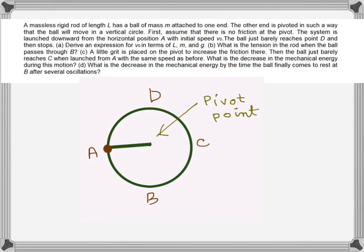The problem describes a massless rigid rod of length l with a small mass m attached to one end and a frictionless pivot at the other end. It undergoes vertical circular motion, starting from position A with velocity v_naught in the counterclockwise direction, going up to point D where it stops and comes back.